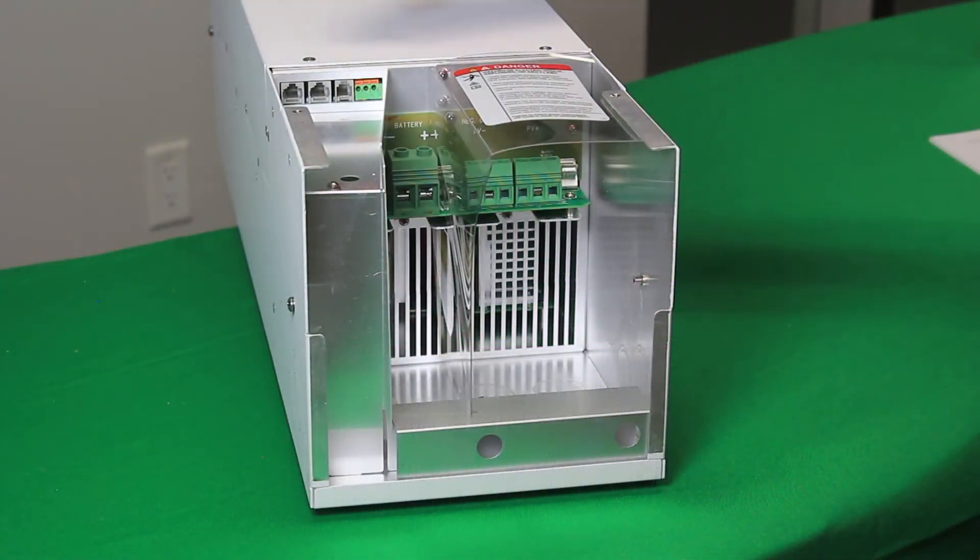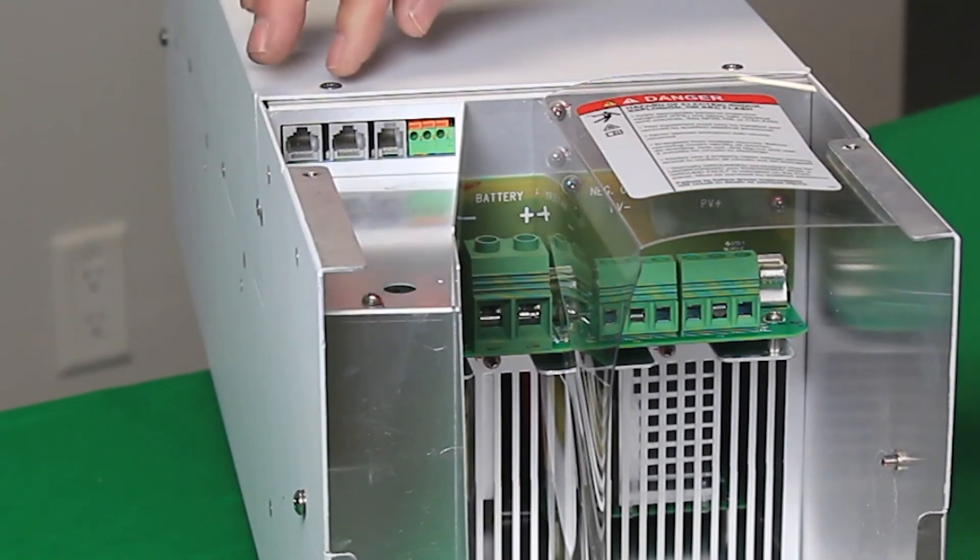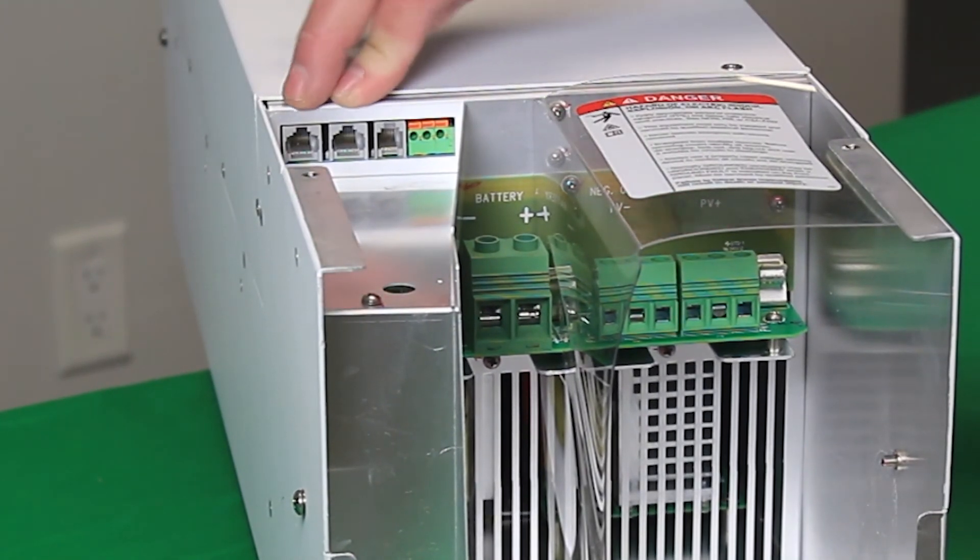And here we see the shielded raceway for the communication cables. Here we have two Xanbus ports. These RJ45 jacks are for the Xanbus network. Every Xanbus device will have two Xanbus ports.